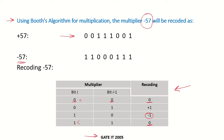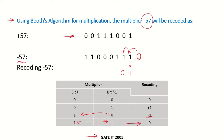Let's use this table to recode our multiplier minus 57. We have to imagine there is an invisible 0 here. Our bit is changing from 0 to 1, so the recoding will be minus 1. Then 1 to 1 — there is no change, so it will be 0. Again, 1 to 1, so 0. Then 1 to 0, so recoding is plus 1. Then 0 to 1 will be minus 1, and 1 to 1 will be 0.